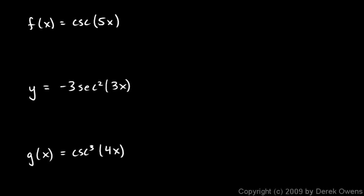In this video we will work through several relatively simple examples of derivatives involving trig functions. In each case we're given a function and we're told to find the derivative. So the first one, f of x is the cosecant of 5x. We need to find f prime, the derivative.